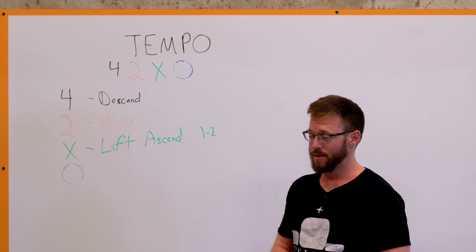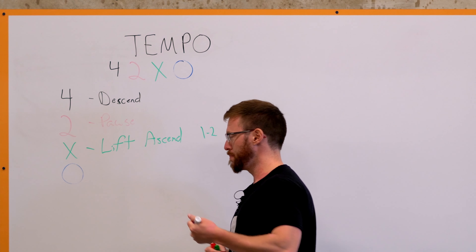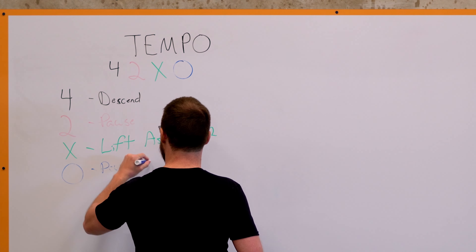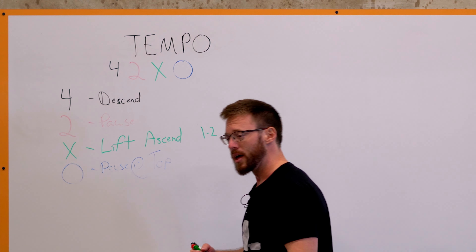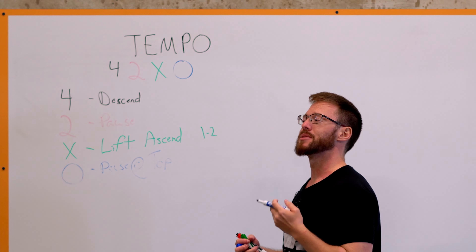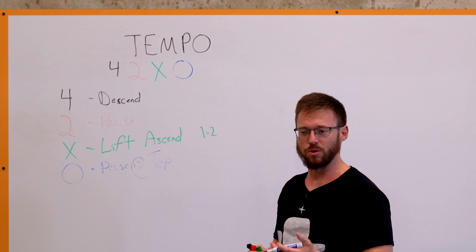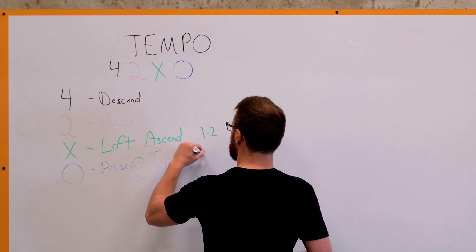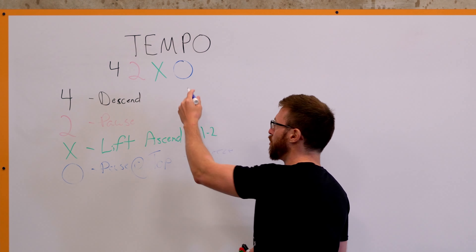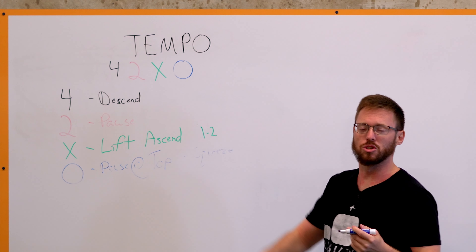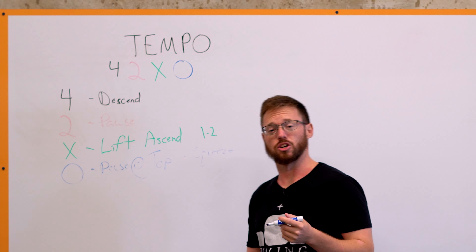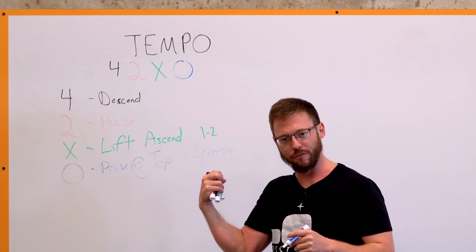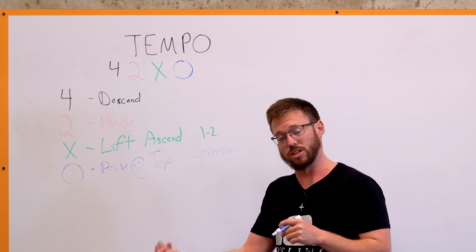The fourth number is any pause at the top — the contracted position. For something like a curl or a press-down where you're flexing, this is where you really squeeze. If this number is 1 or 2 seconds, you're bringing the implement up and squeezing as hard as you can for those 1 to 2 seconds to prevent yourself from starting to go back down.